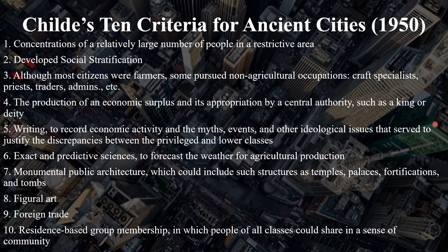Fifth, the settlement must use writing to record economic activity, as well as the myths, events, and other ideological issues that serve to justify the discrepancies between the privileged and lower classes of the settlement. Sixth, exact and predictive sciences must be used as well. These sciences must be used to forecast the weather, since knowing the weather is essential for successful agricultural production. The seventh thing a center must have to be considered a city is monumental public architecture, which would include things like temples, palaces, fortifications, and tombs.